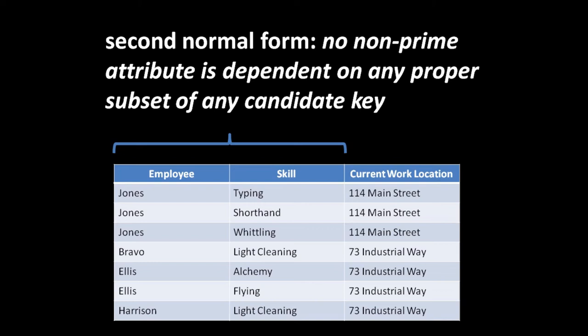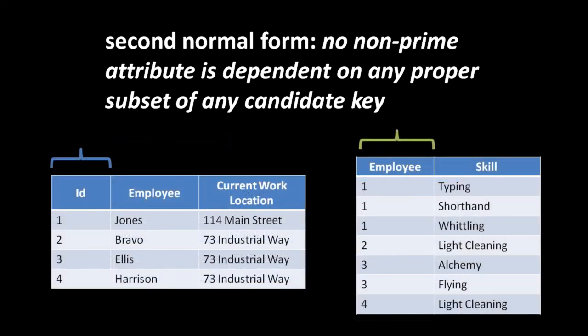We have a non-prime attribute which is dependent upon a proper subset of a candidate key - so this table doesn't conform to the second normal form. The most sensible way of correcting this is to split it into two tables: one for employees and a second table expressing the relationship between employees and their skills. This is actually an example of a many-to-many relationship - for each employee there are potentially multiple skills, and for each skill there are potentially multiple employees. A single table cannot express a many-to-many relationship; you have to bring in another table for that purpose.